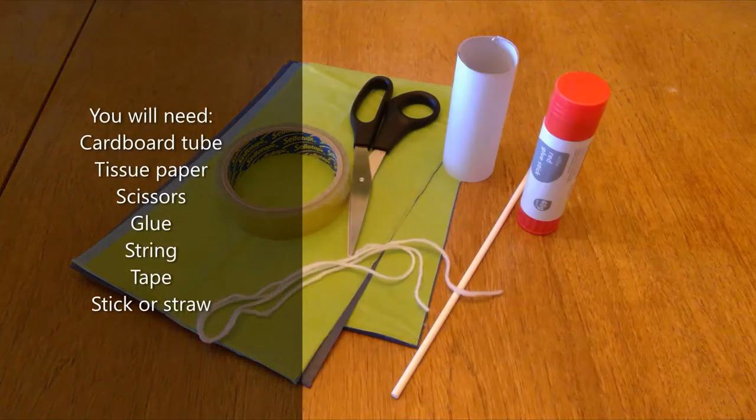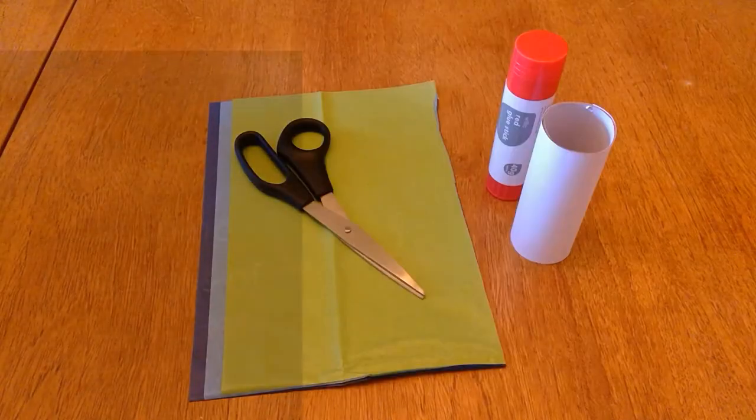Finally, I'm going to make a windsock. I've got a cardboard tube, some tissue paper, scissors, glue, string, tape, and a stick or a straw.